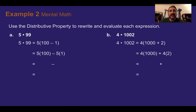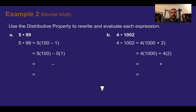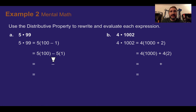We're going to skip ahead to Example 2: mental math. Use the distributive property to rewrite and evaluate each expression. The first one is 5 times 99. Doing this without any tricks might be a little difficult, so let's use the distributive property to help us mentally do it.